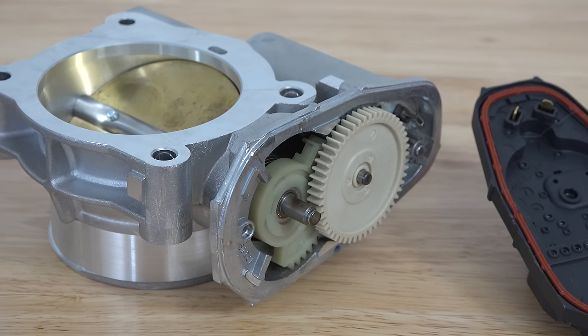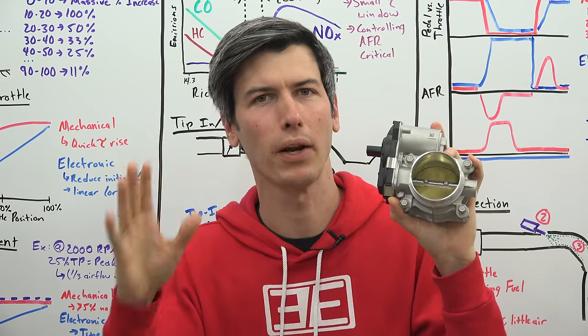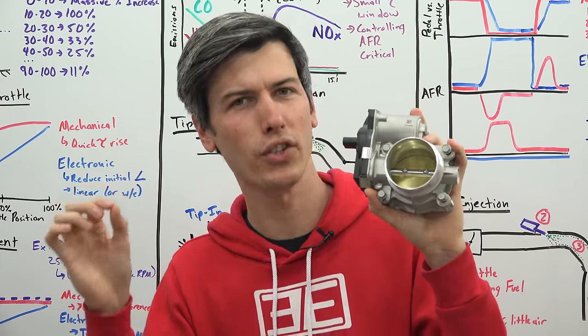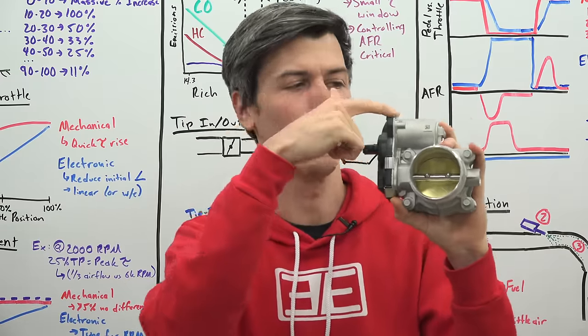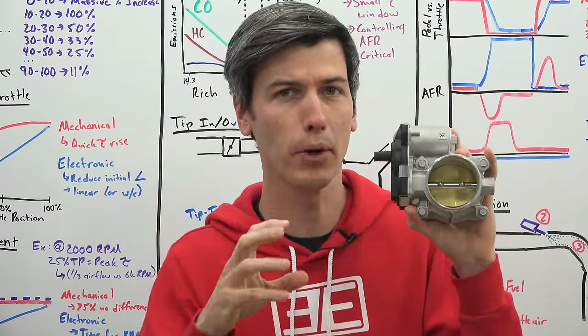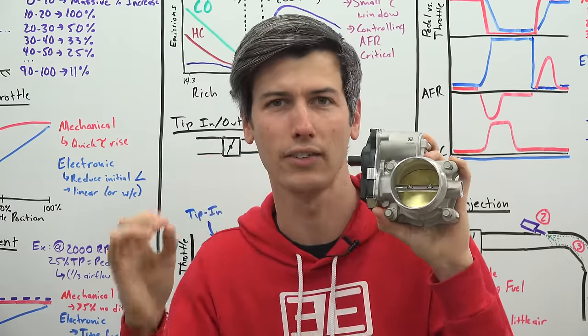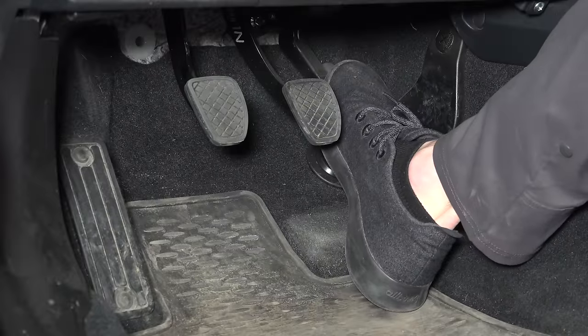An electronic throttle eliminates that direct link between the driver and the throttle. So now when you press on the accelerator pedal, a position sensor tells a controller, which tells an electric motor how much to open up this throttle valve. However, it can listen to other inputs and choose the exact amount it wants to open up. It doesn't have to directly listen to exactly what the driver is telling it to do.